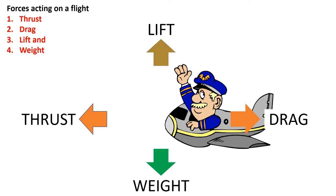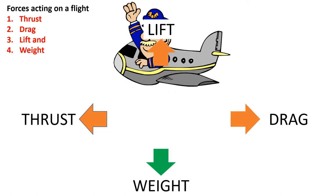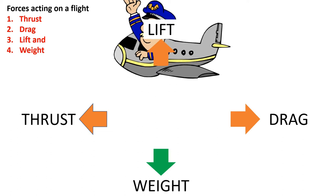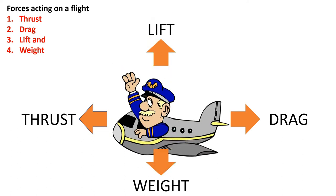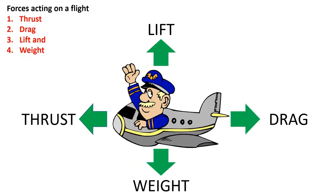Lift is a force which holds the aircraft in the air, and the majority of the lift is generated by the wings. Weight is a force that pulls the aircraft to the ground due to gravity. Thus, for any aircraft moving in air, the forces acting on it are thrust, drag, lift and weight.